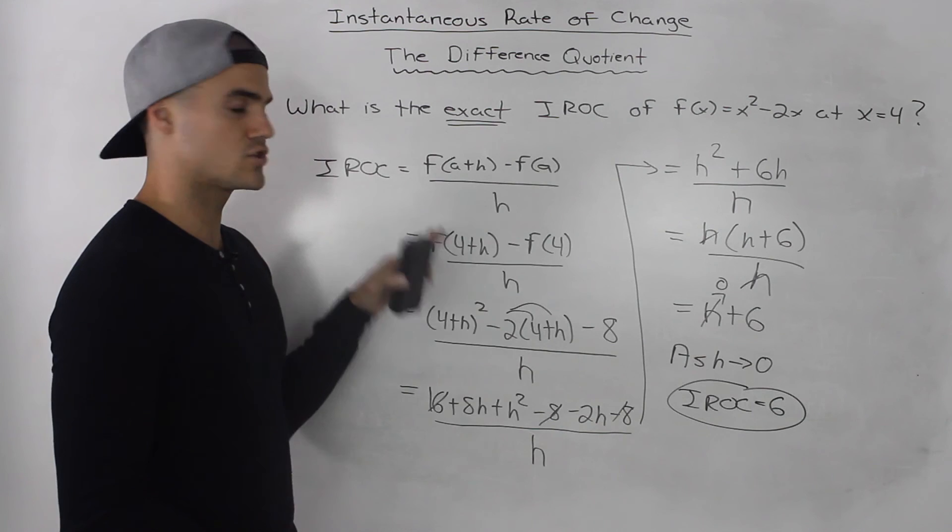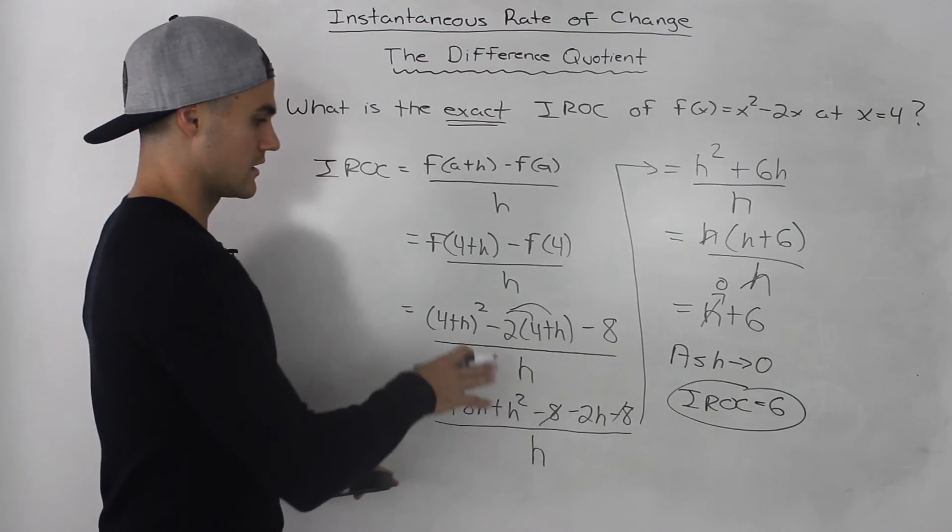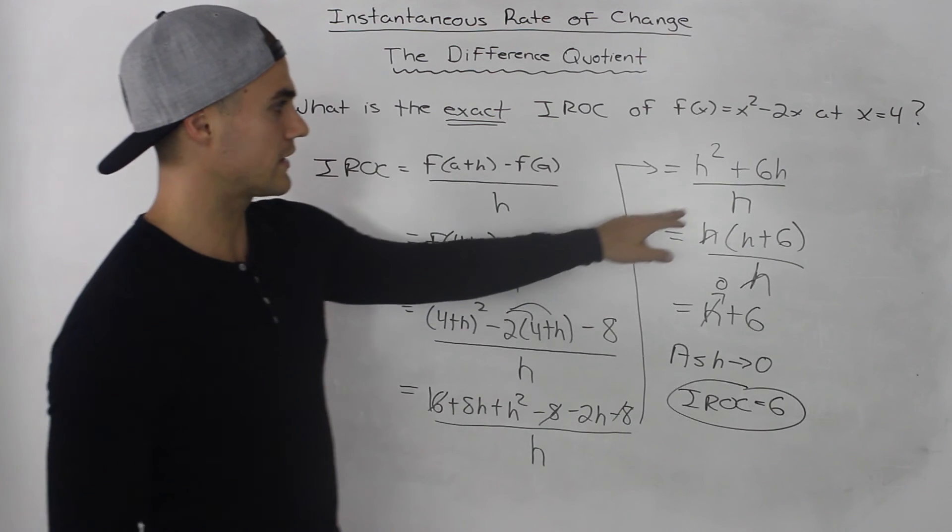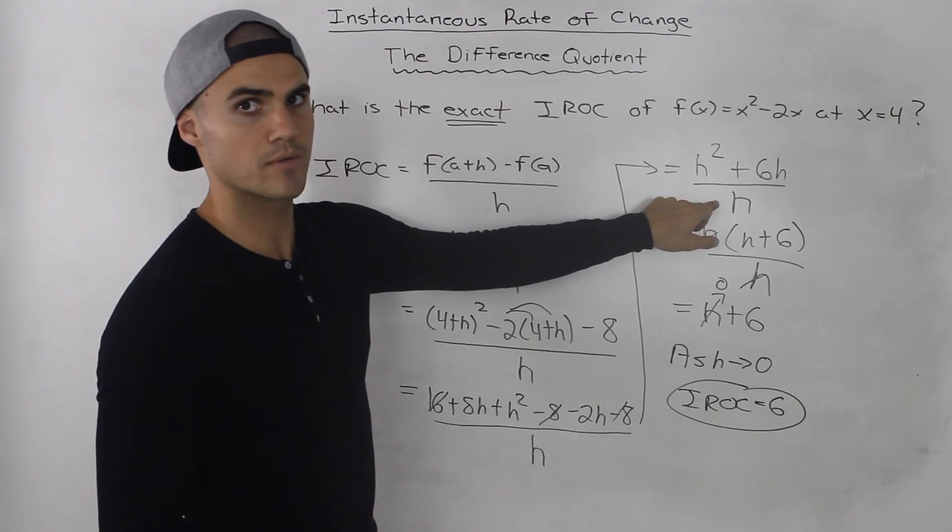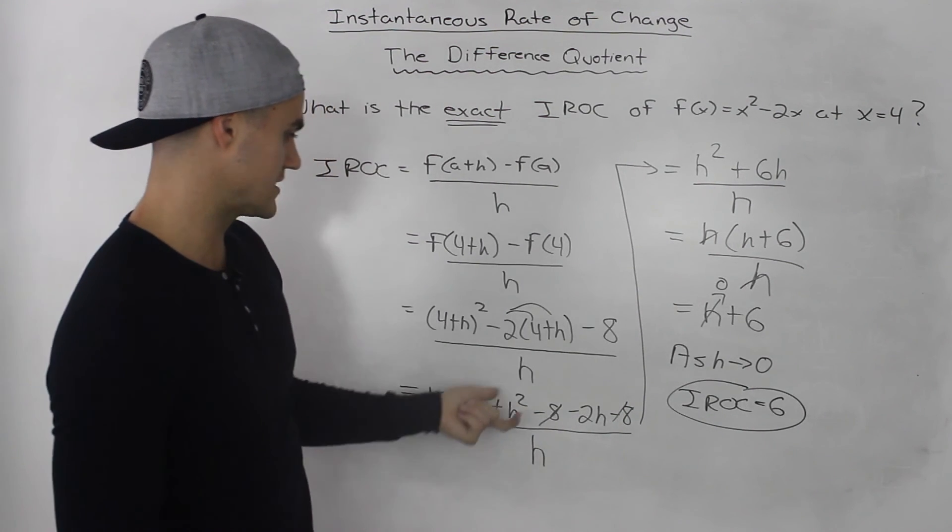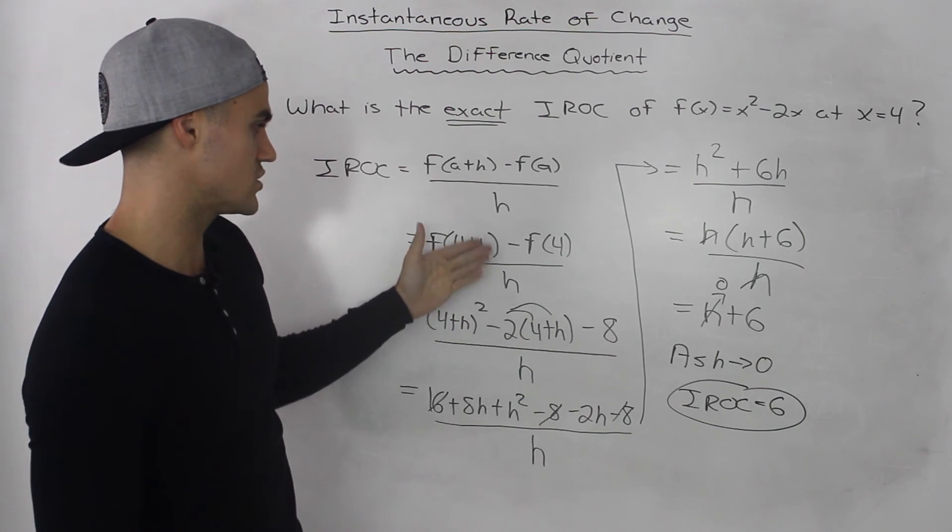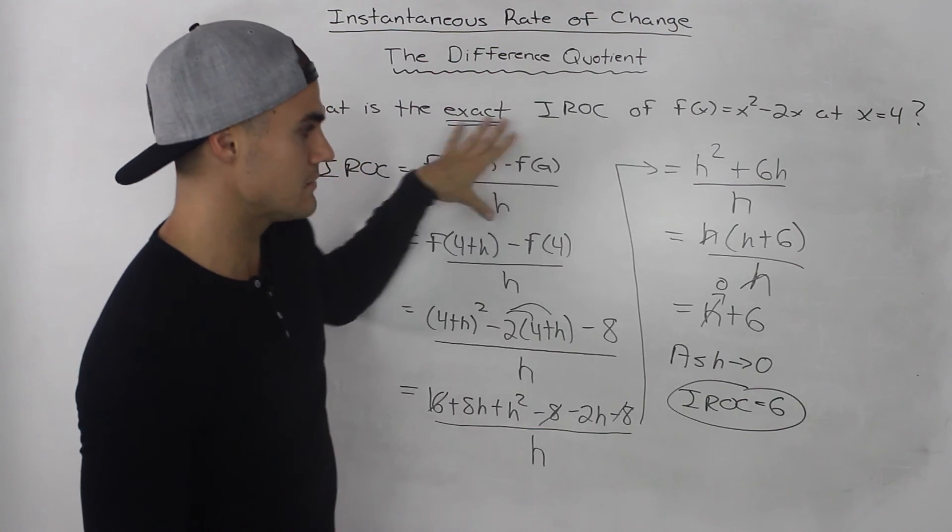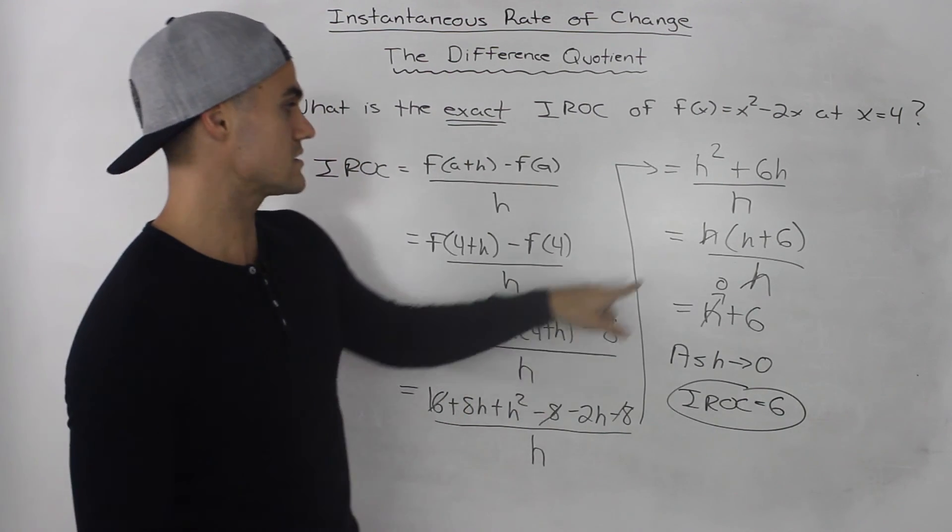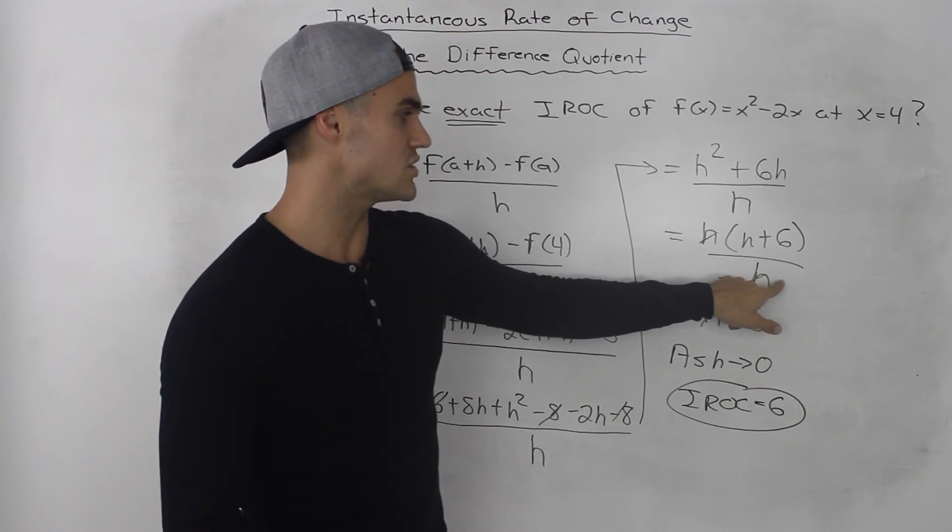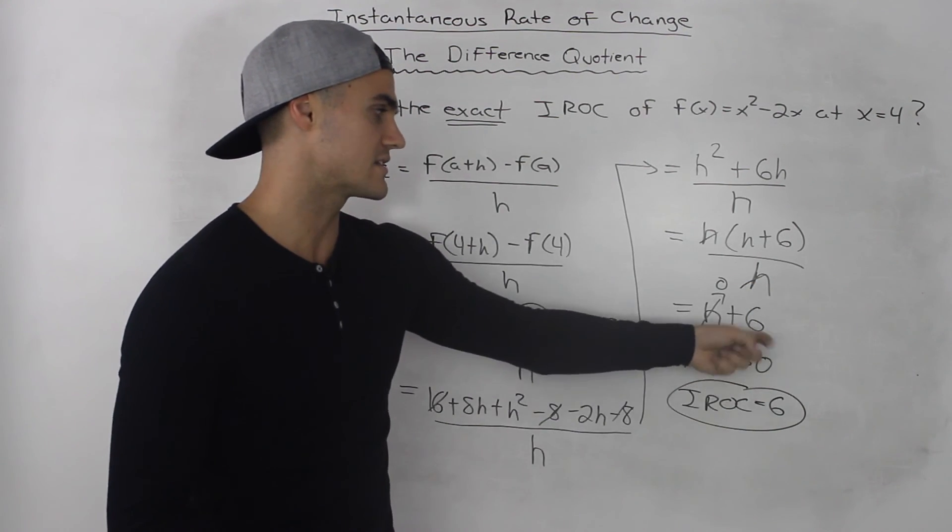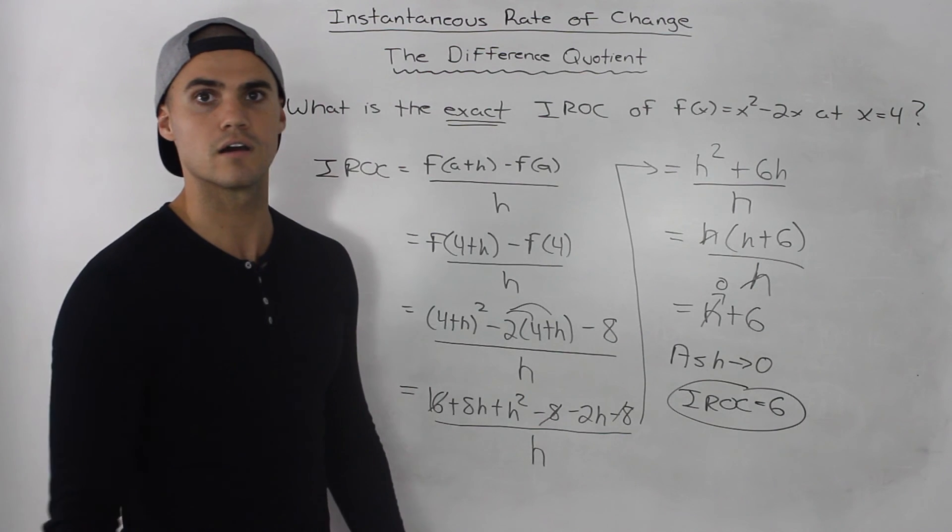So that's a way to do it algebraically. Remember, the thing to remember when you're doing this algebraically is you always want to cancel out this h in the denominator. Because notice how we can't plug in 0 for h right away, because you can't be dividing something by 0. So you need to algebraically manipulate the difference quotient always to cancel out this h in the denominator, and then you can plug in 0 for h and get your exact instantaneous rate of change.